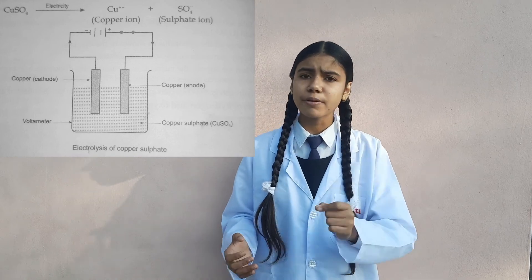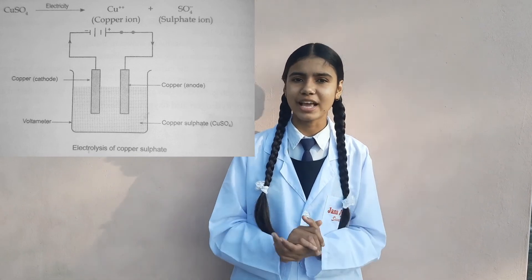Electrolysis of copper sulfate: the breaking down of copper sulfate into copper ions and sulfate ions in the presence of electricity is called electrolysis of copper sulfate. Procedure: take two copper electrodes, put copper sulfate solution in the voltameter, set up the apparatus, and supply electric current. Mechanism: copper ions having positive charge move towards the cathode, gain two electrons, and form neutral copper atoms that deposit on the cathode surface, increasing its thickness. Sulfate ions move to the anode, react with copper atoms to give copper sulfate, keeping the concentration constant. The thickness of the anode decreases.